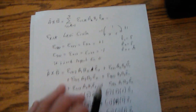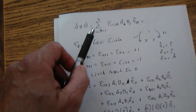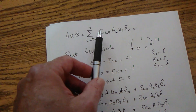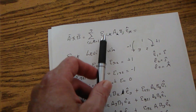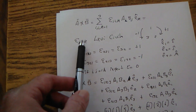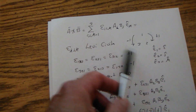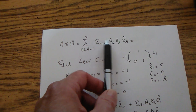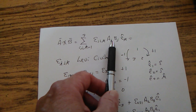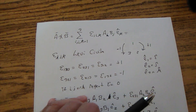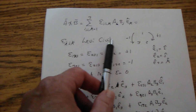That's not how they do it. Here's how they do it: they say a×b equals the sum over i, j, k from 1 to 3 of epsilon_ijk — that's the Levi-Civita permutation operator — multiplied by a_i times b_j times the unit vector e_k-hat.